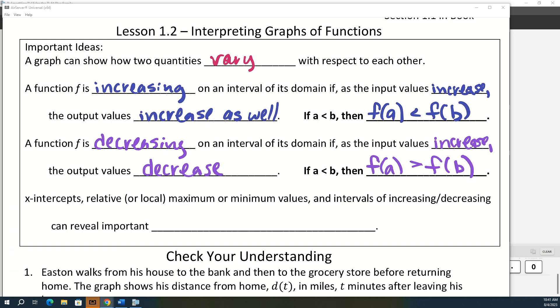And then on the graphs, kind of like all the good stuff, if it's a contextual situation, all the interesting things happen on the x-intercepts, the relative, sometimes it's called local, maximum minimum values, and then the intervals of increasing and decreasing. That's kind of where the important information is revealed.